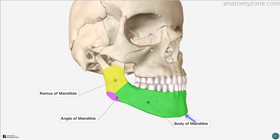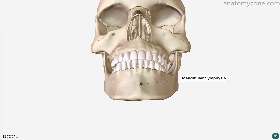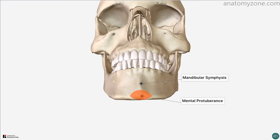The anterior central protuberance of the mandible forms the chin. At this midline point there is a ridge, the mandibular symphysis, which marks the line at which the two parts of the bone were united in early life. The mental protuberance is enclosed by the division of the ridge inferiorly and forms the mental tubercle on either side.